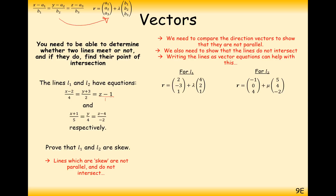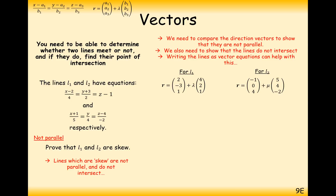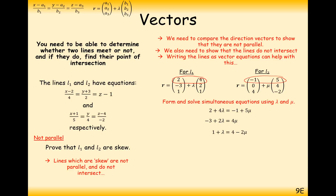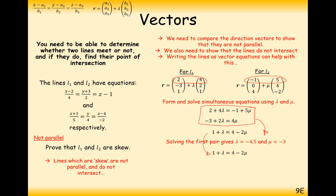They must either intersect or be skew. Create simultaneous equations from the x components and the y components, setting them equal to each other, and save the z components for later. Solve the first two simultaneous equations and you'll get lambda equals minus 4.5 and mu equals minus 3. Substitute those values back into the z components, and they do not equal the same — when they don't equal the same, the lines are skew.